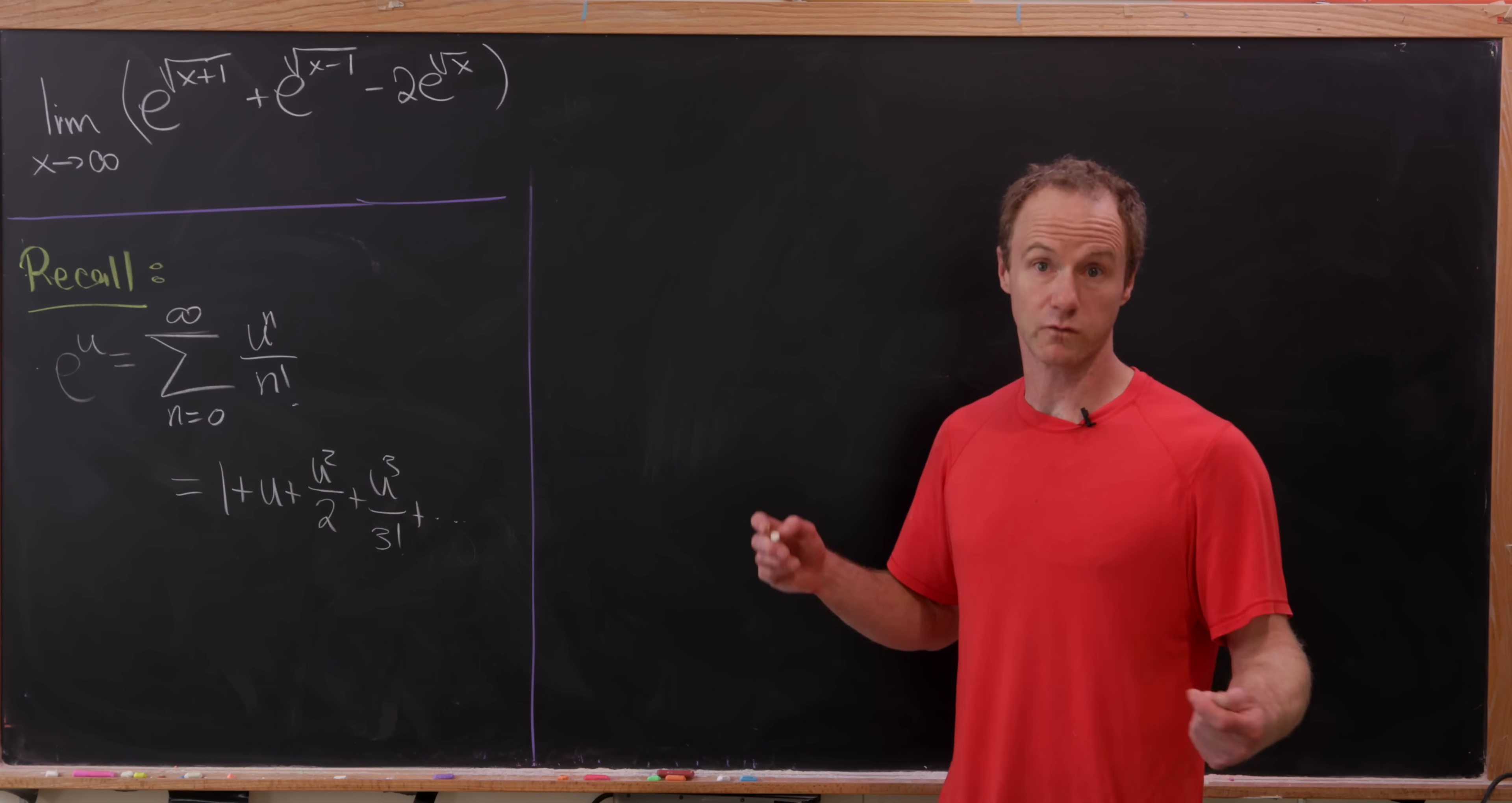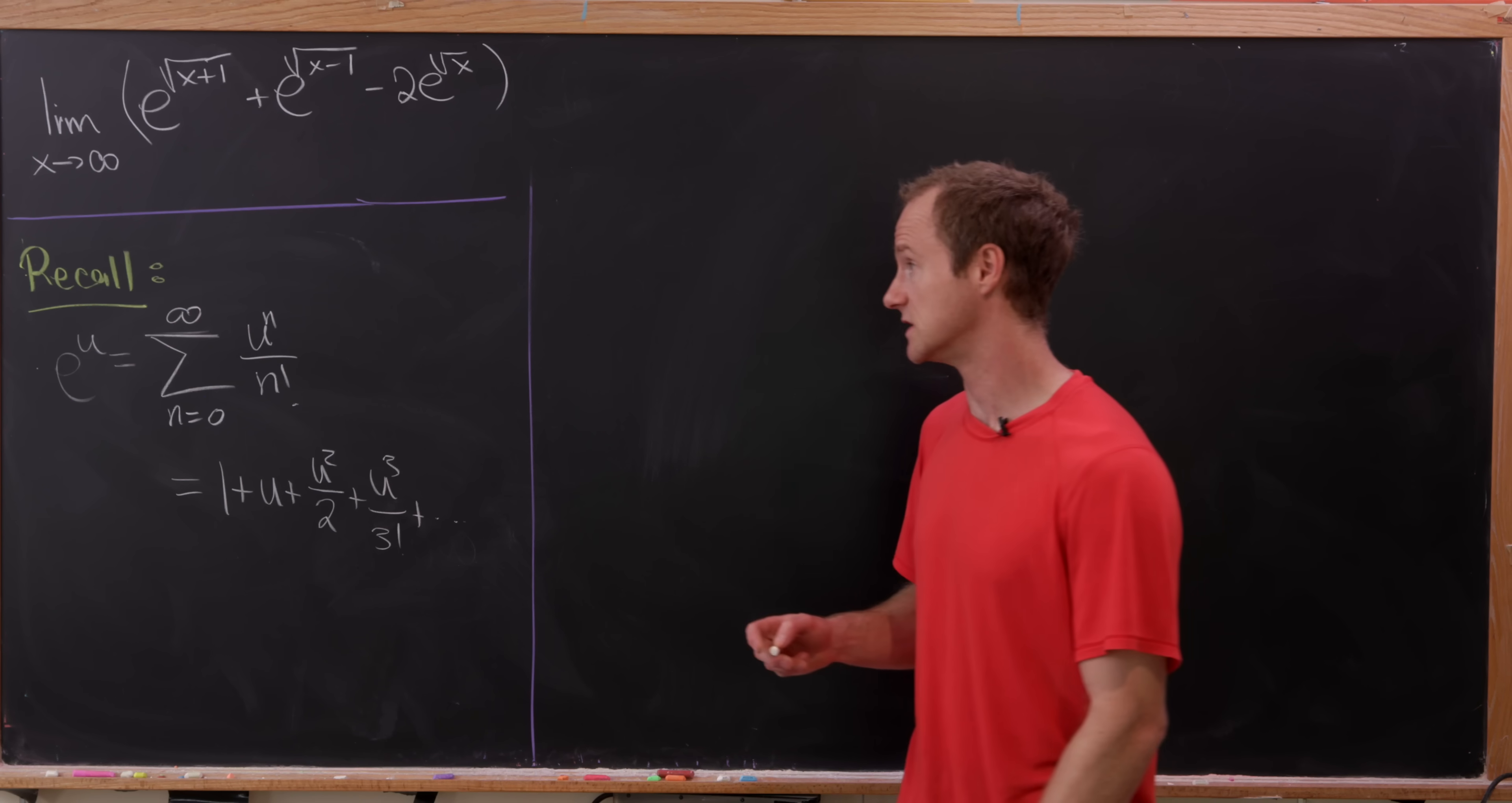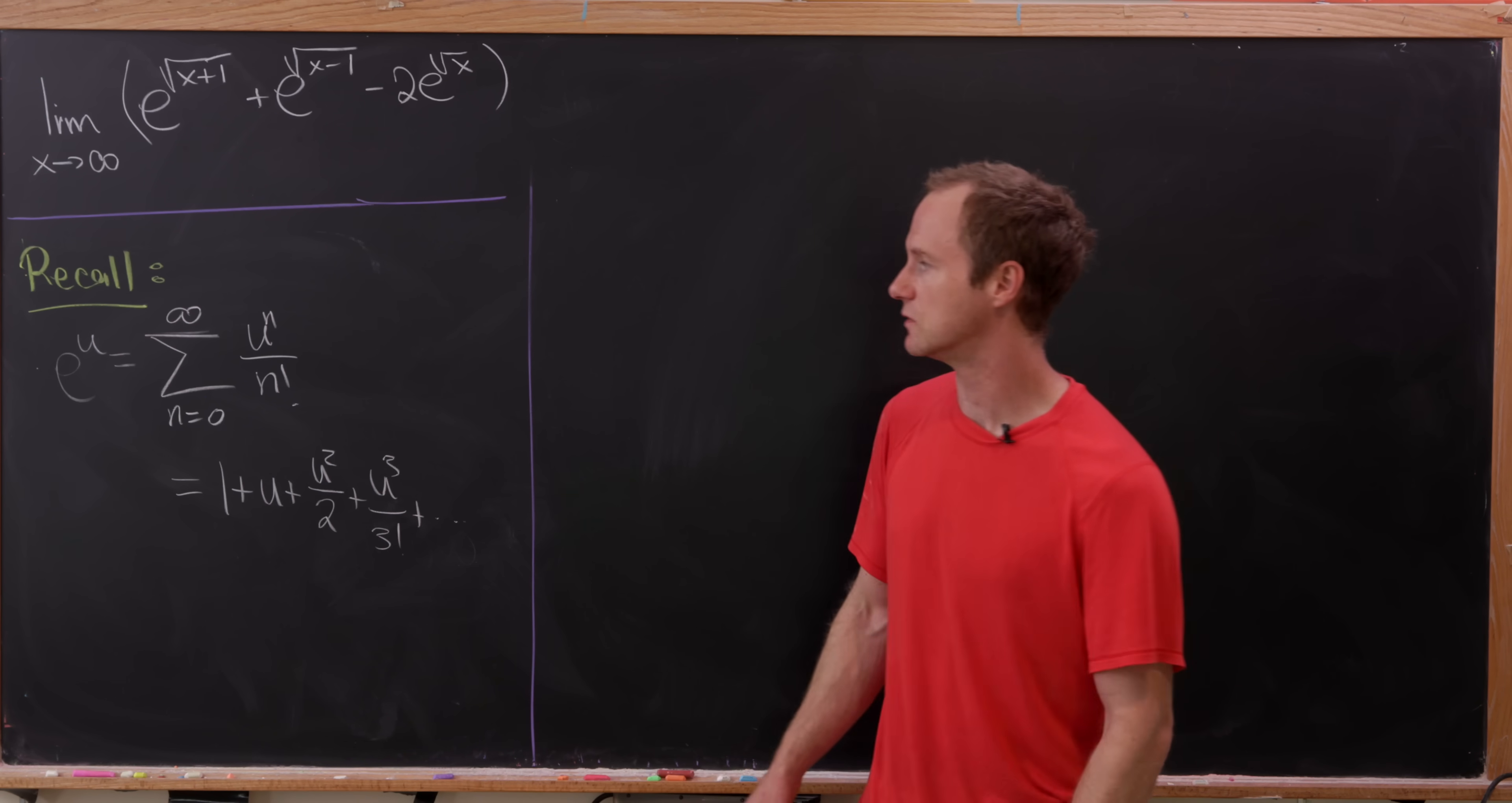So, well, let's recall the Taylor approximation or maybe the Taylor series for the exponential function. It says that e to the u is the sum as n goes from 0 to infinity of u to the n over n factorial.